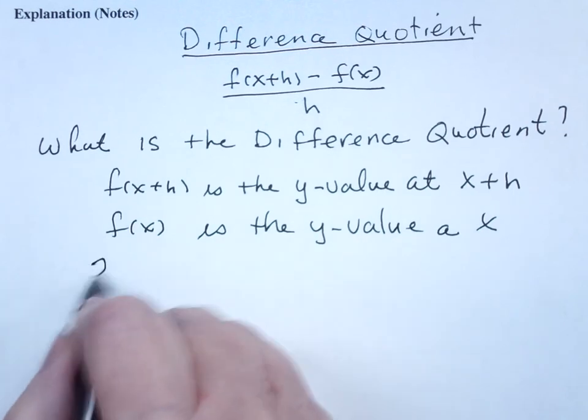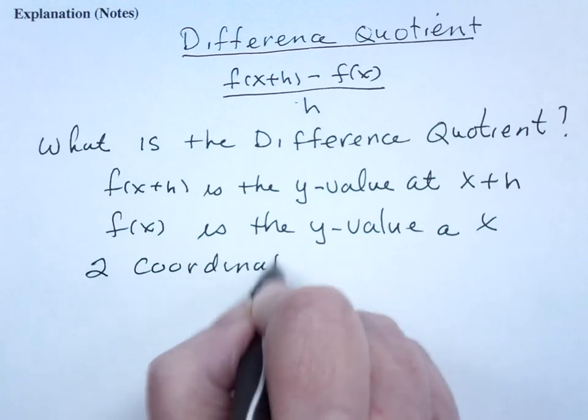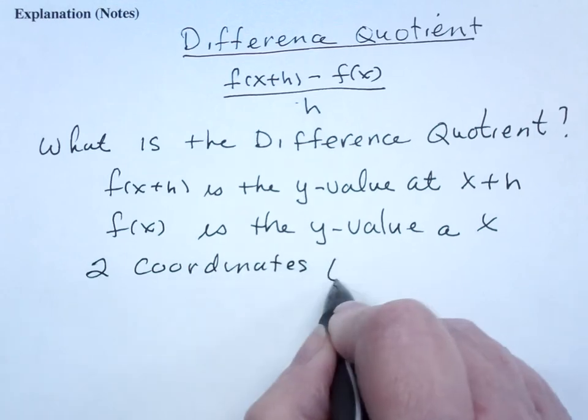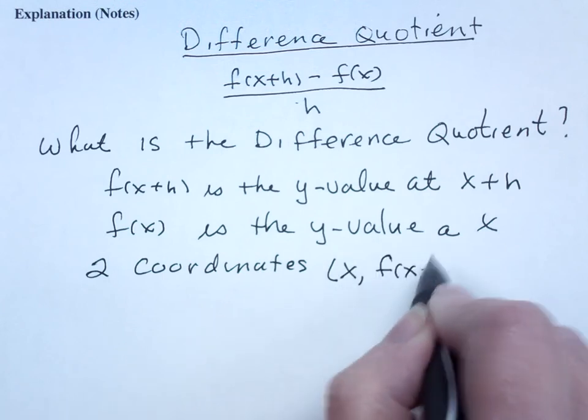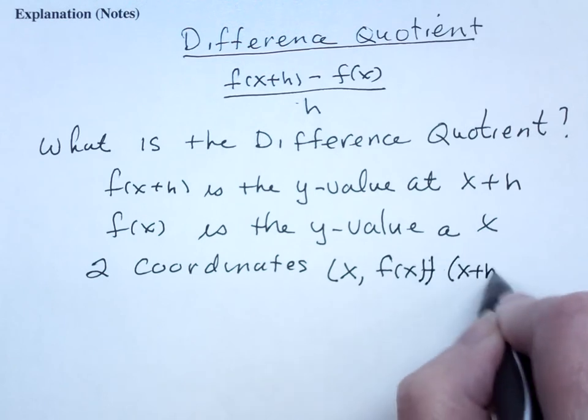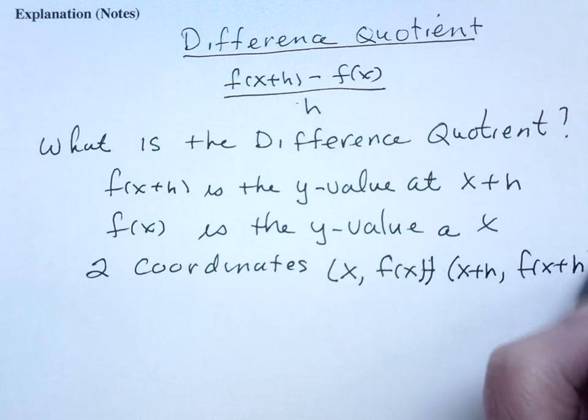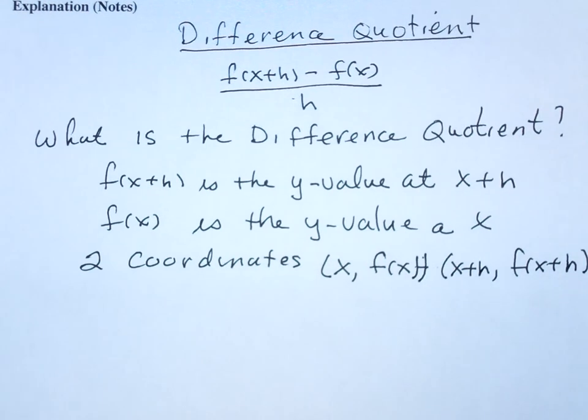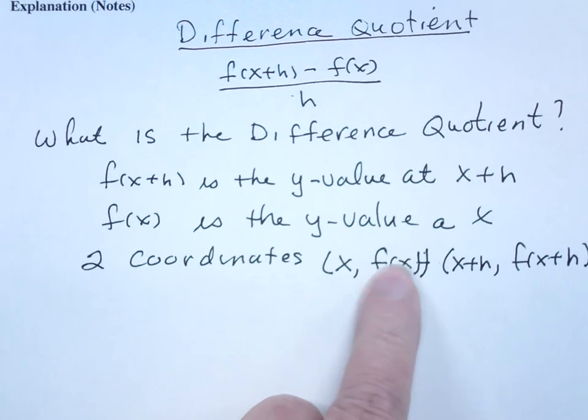So I have two coordinates, namely x, f of x, and x plus h, f of x plus h. And that should be just an x. I know that's an x and that's a parenthesis.